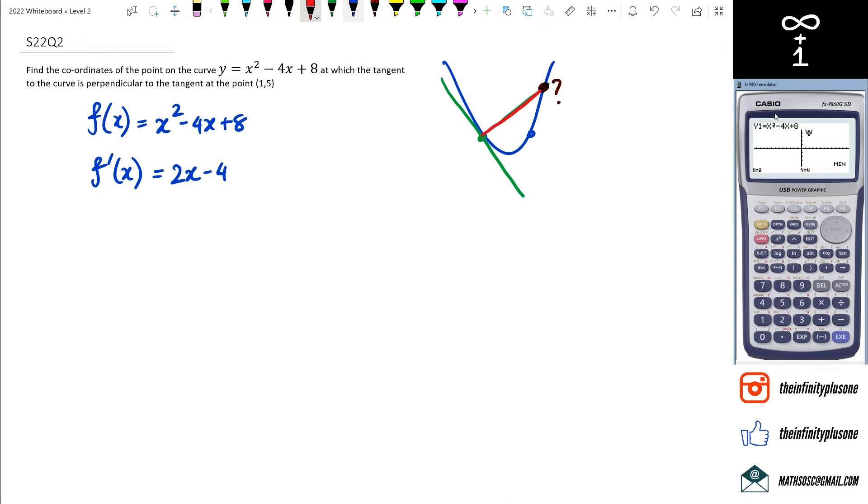So the green line's gradient, the point is actually 1, 5. That's actually given to us. So we want to find out what the gradient at 1 is. So we're going to substitute 1 in here and we find out that it is negative 2.